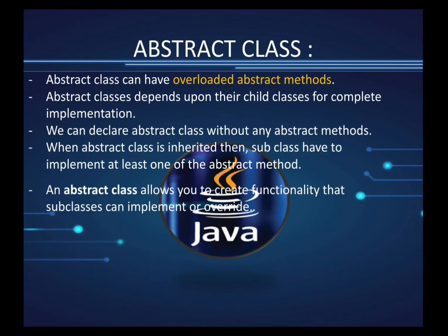An abstract class allows you to create functionality that subclasses can implement or override. Whatever functions a subclass wants to implement, it can inherit that class and provide the implementation.